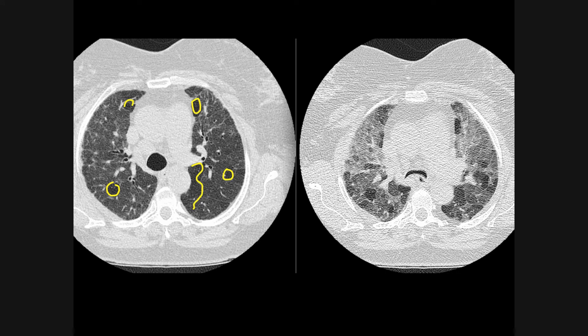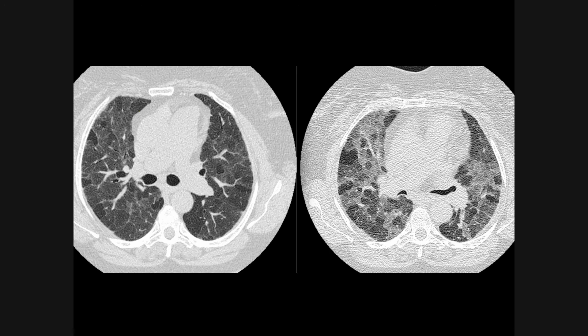This demonstrates that on expiration the areas of reduced attenuation remain reduced, and the areas of grey lung become even greyer during expiration. There is an accentuation of the difference in density between the areas of air trapping and the areas of alveolitis. Note that the posterior wall of the trachea has gone inwards, denoting that this is an expiratory scan. These are axial slices a little lower down on inspiration and expiration.